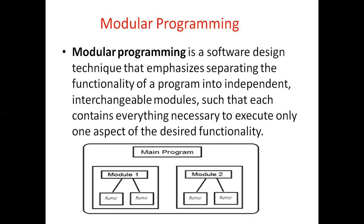All modules are independent of each other — there is no relation between module one and module two. Module one is independent and module two is independent; both modules are independent of each other. This is called modular programming: we make modules according to our requirement and program accordingly.